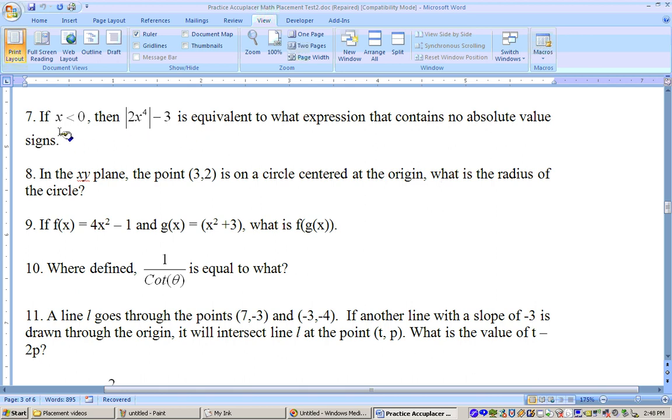Okay, on problem number 7 it says, if x is less than 0, then the absolute value of 2x to the 4th minus 3 is equivalent to what expression that contains no absolute value.